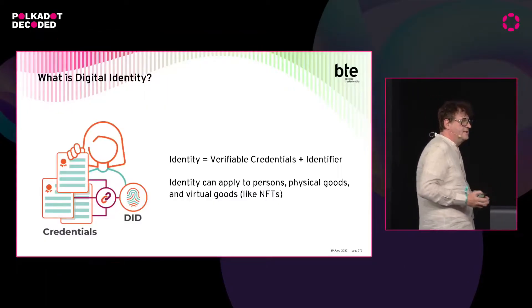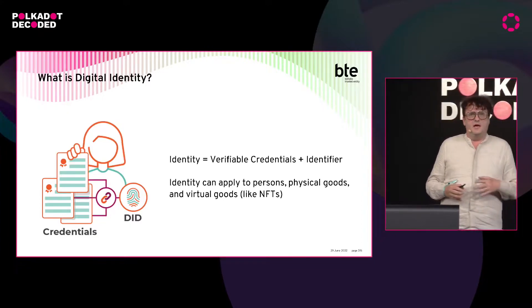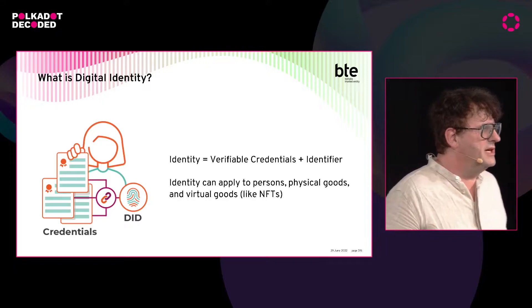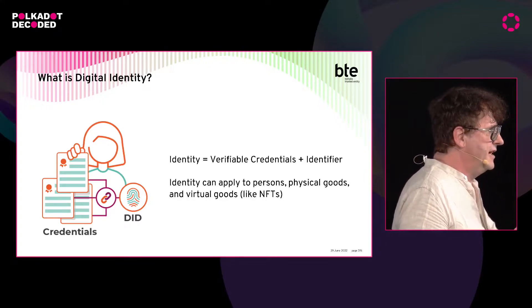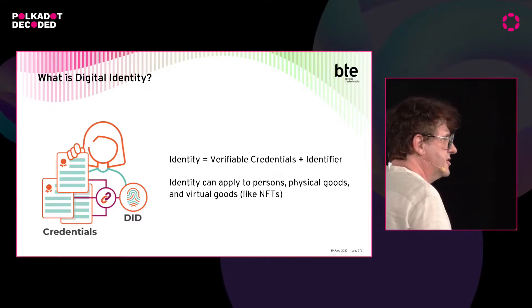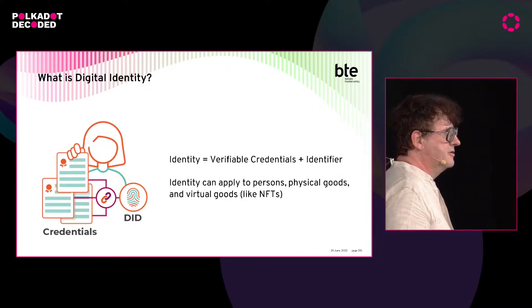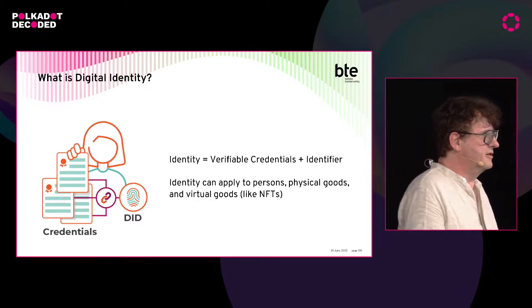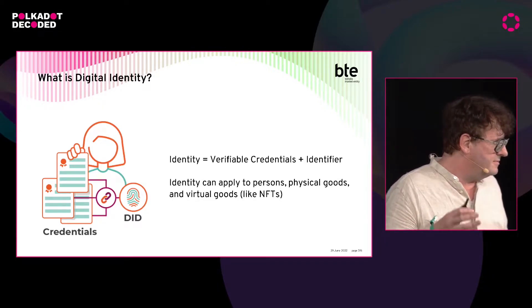To understand ACID DIDs, I think we first have to understand what decentralized identity is. What is decentralized identity or digital identity? It always starts with what we call an identifier. An identifier is what would be in the physical world, for example, your face or your fingerprint or your signature. This is something which is naturally decentralized. Your fingerprint is not given to you by a government, it's not given to you by a big company. You make it yourself.